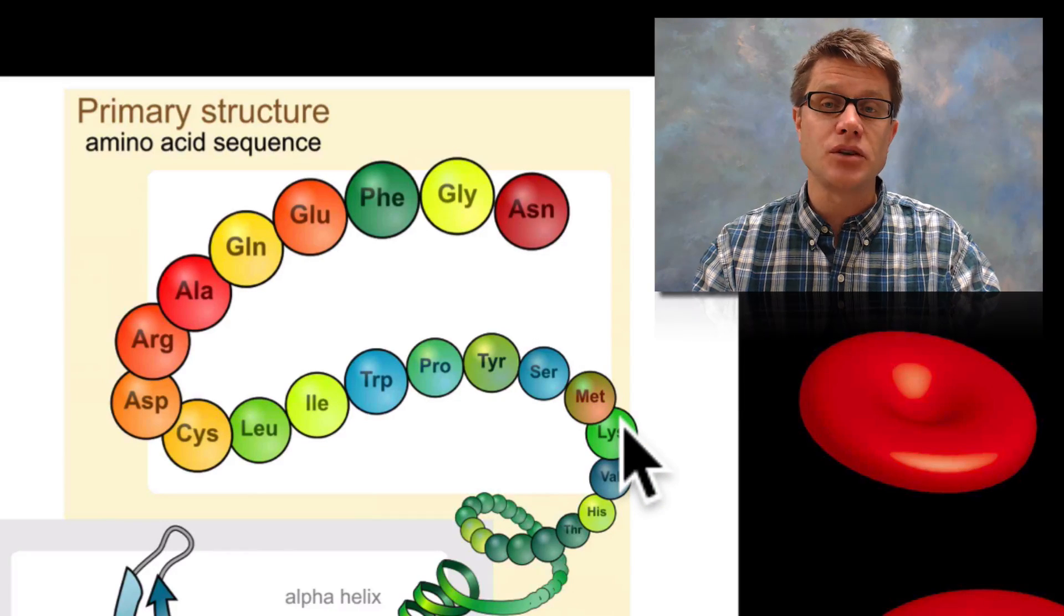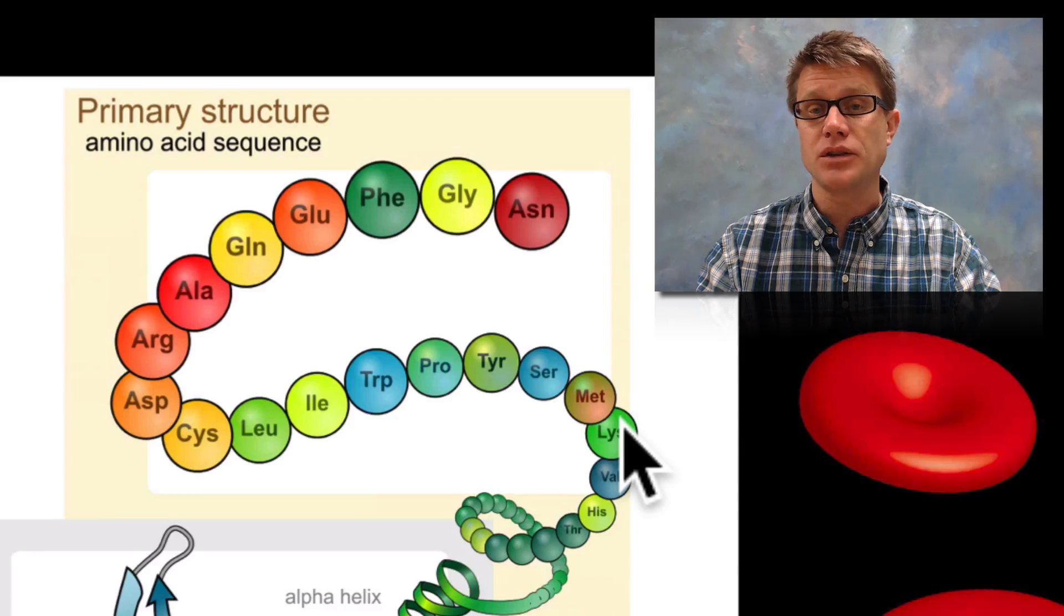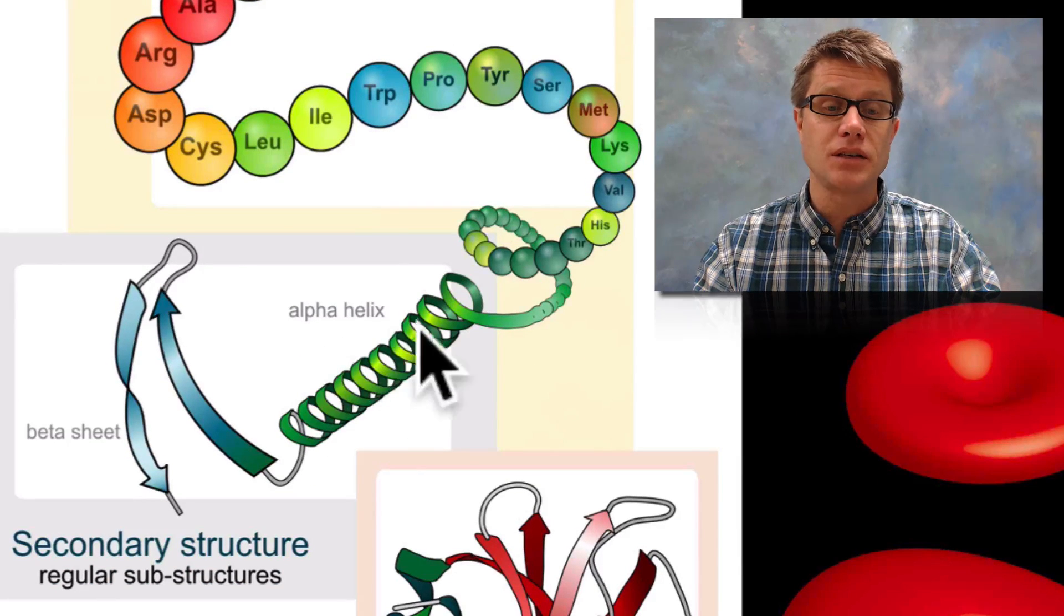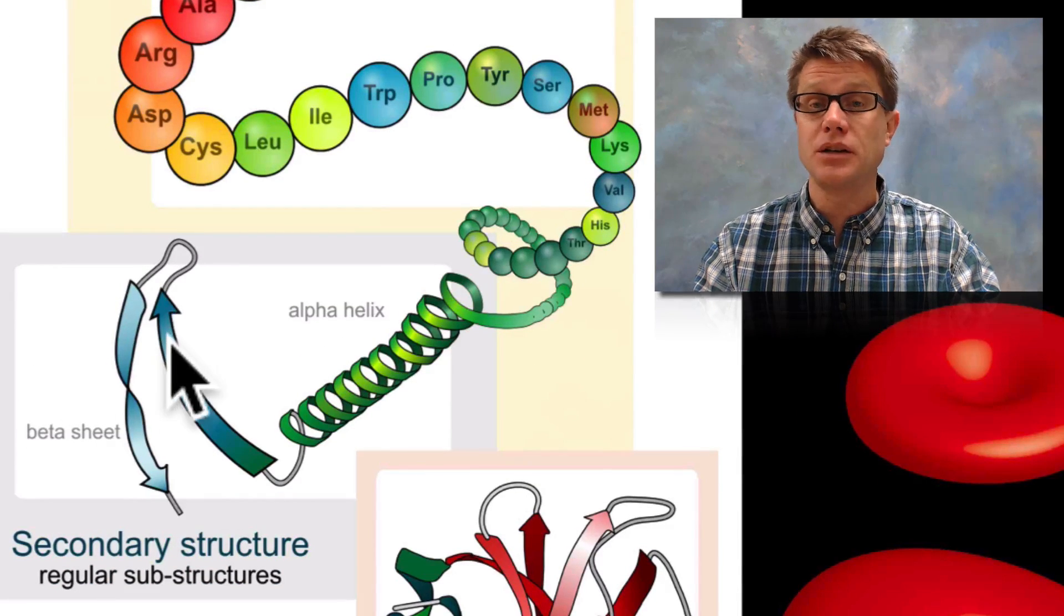The moment it comes out of the ribosome however, intermolecular forces take over. So hydrogen bonds are going to weave this into an alpha helix or a beta pleated sheet.